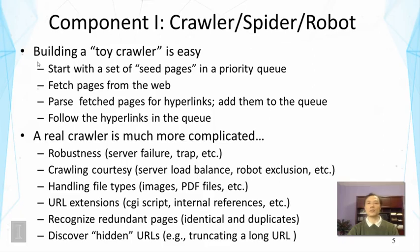For example, robustness: what if the server doesn't respond? What if there's a trap that generates dynamically generated web pages that might attract your crawler to keep crawling the same site? There's also the issue of crawling courtesy — you don't want to overload a particular server with many requests. You must respect the robot exclusion protocol. You also need to handle different file types: images, PDFs, and various formats. CGI scripts, internal references, and JavaScript on pages also create challenges.